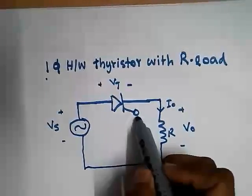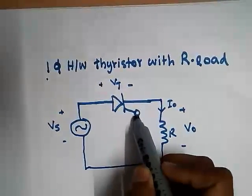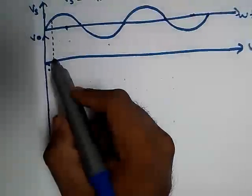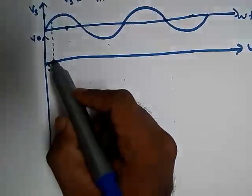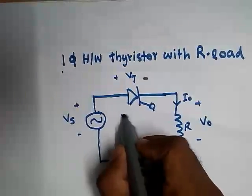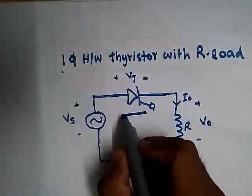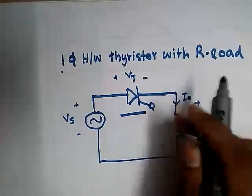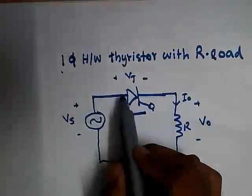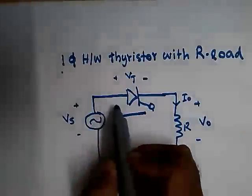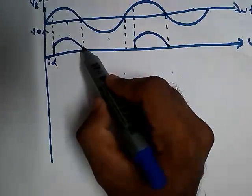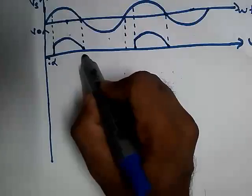If we apply a triggering pulse — a gate pulse — it will go into forward conduction mode. At angle alpha, we give a trigger pulse so that the thyristor goes into forward conduction mode. When the thyristor goes into forward conduction mode, it acts as a short circuit. So Vs is directly applied across the output voltage, and the output voltage becomes equal to the supply voltage. The output voltage follows the input voltage up to the point omega t equal to pi.